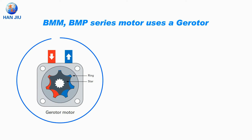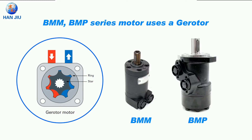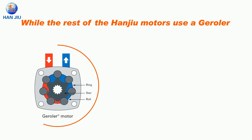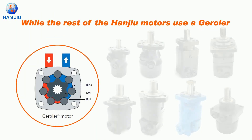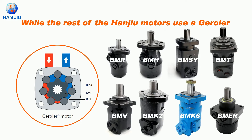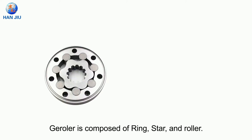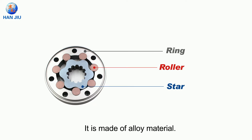The BMM and BMP series motors use a gerotor, while the rest of the Handu motors use a geroller. Take BMH, BMS, and BMT as examples: the geroller is composed of a ring, star, and roller, and it is made of alloy material.